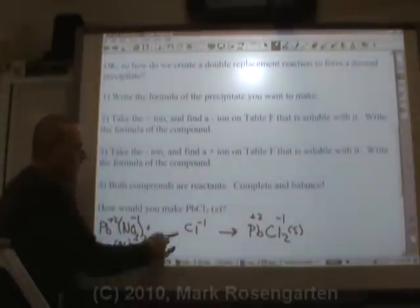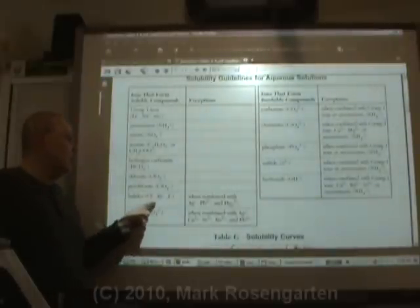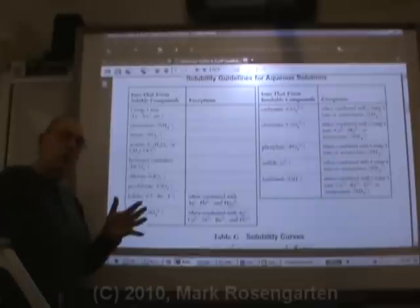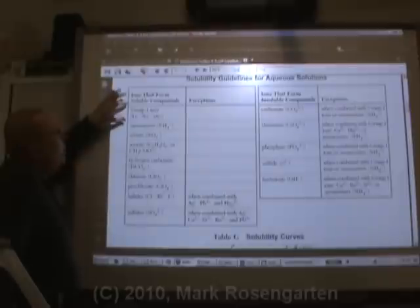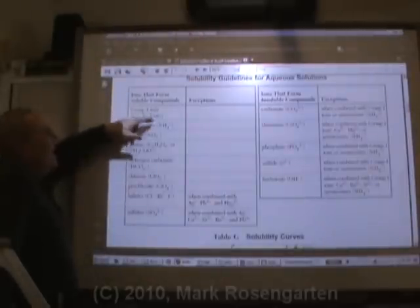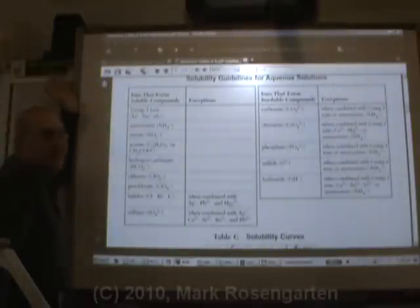Now we need to find a soluble chloride compound. The chlorides are usually soluble. There's only three exceptions, but you know what? Why take chances? Use a positive ion that's always soluble, like a group one ion or ammonium. I'm going to go with a group one ion. Let's use potassium, K.